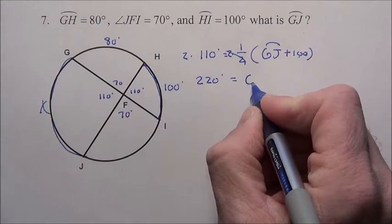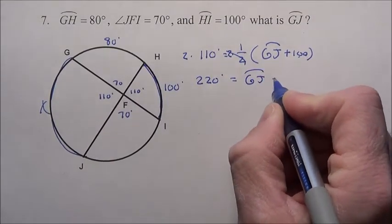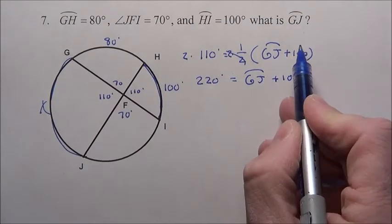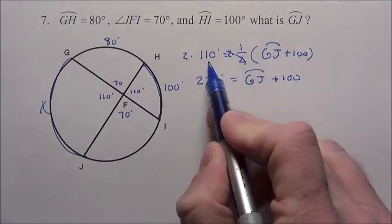See, 220 is going to be what GJ was plus 100, because again, I knew half of 220 would give me the 110.